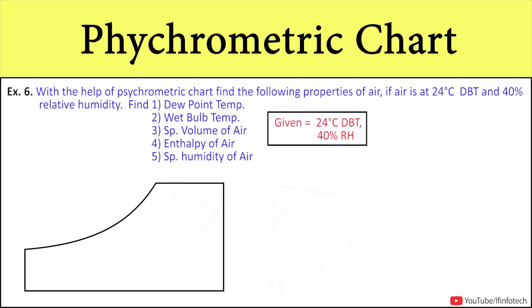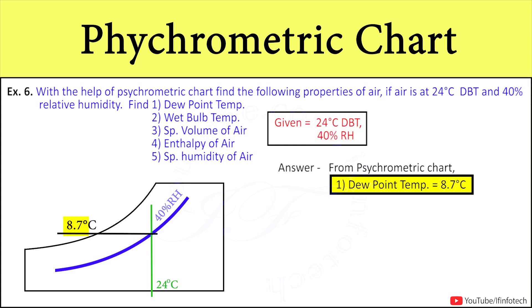So first we will write down the data which has been provided. The given data is air at 24 degrees Celsius dry bulb temperature and 40% relative humidity. And once it is plotted, then we extend this line, we got dew point temperature as 8.7 degrees Celsius.